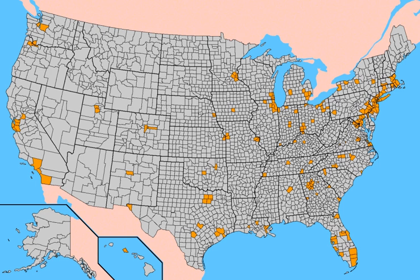The Twelfth Amendment requires the House of Representatives to go into session immediately to vote for a President if no candidate for President receives a majority of the electoral votes — since 1964, 270 of the 538 electoral votes. In this event, the House of Representatives is limited to choosing from among the three candidates who received the most electoral votes for President. Each state delegation votes as a block, each delegation having a single vote; the District of Columbia does not receive a vote. A candidate must receive an absolute majority of state delegation votes — at present, a minimum of 26 votes — in order to become the President-elect. Additionally, delegations from at least two-thirds of all the states must be present for voting to take place. The House of Representatives has chosen the President only twice: in 1801 under Article 2, Section 1, Clause 3, and in 1825 under the Twelfth Amendment.